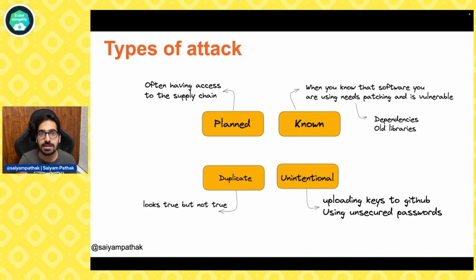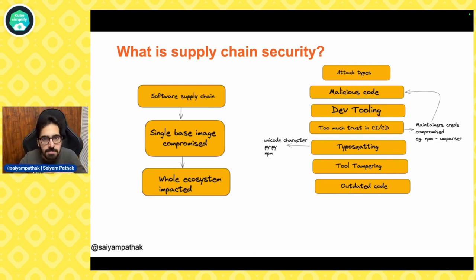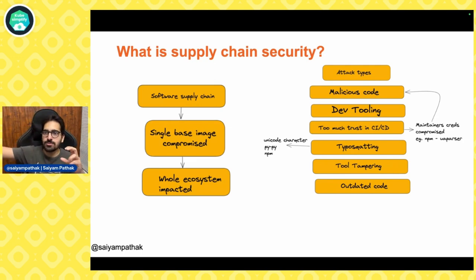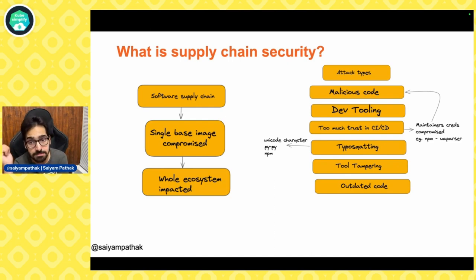Duplicate typosquatting — like the PyPI attack — looks true but isn't. In supply chain security, a single base image compromise impacts the whole system; a small library in a particular toolchain gets impacted and the whole chain gets impacted. There's malicious code, dev tooling impacts, CI/CD credential compromise — this has happened before with the NPM incident. Then there's typosquatting in PyPI and NPM, tool tampering, and outdated code — these are the common types of attacks.